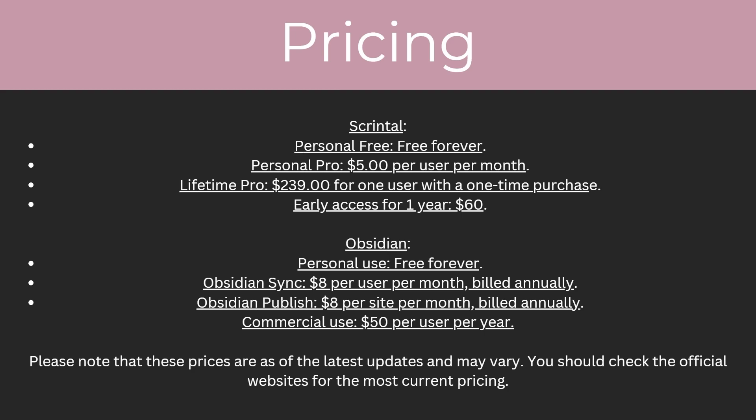For Obsidian, they also have four plans. The first is a personal use plan which is free forever. Next is the Obsidian Sync plan at $8 per user per month, billed annually. Then the Obsidian Publish plan at $8 per site per month, billed monthly. And the commercial use plan at $50 per user per month. Please note these prices are from the latest updates and may vary — check the official websites for the most current pricing.